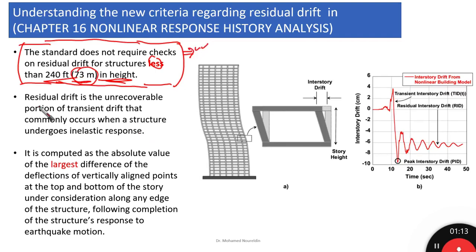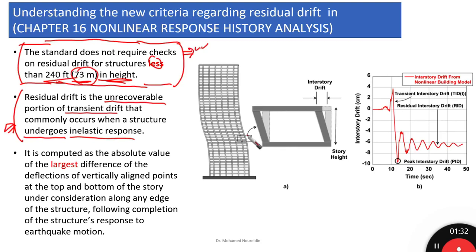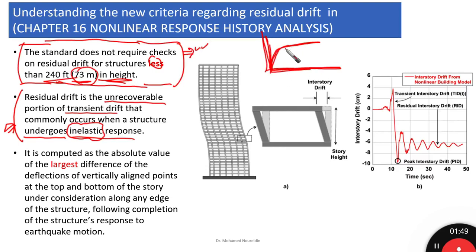Residual drift is the unrecoverable portion of transient drift, as we said before, that commonly occurs when a structure undergoes an inelastic response. Whenever you have residual drift in a building, this means the building is undergoing inelastic response. If we look at the famous pushover or capacity curve of the structure, the system is operating somewhere in the inelastic range — it is an indication of the inelastic behavior of the building.